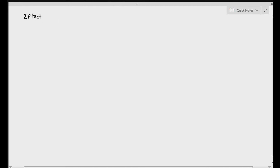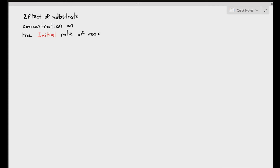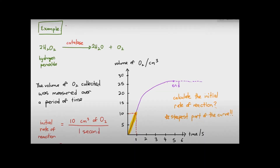We are going to talk about the effect of substrate concentration on the initial rate of reaction in an enzyme-catalyzed reaction. In the previous video, I did tell you that the initial rate of reaction is referred to as the steepest rate of reaction that will happen in an experiment — it's the steepest part of the chemical reaction.